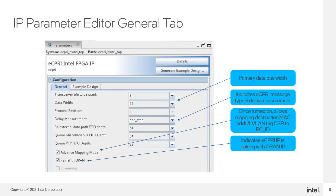All configurable options currently available for customizing your IP instance are found on the General tab in the GUI. At the top, select the transceiver tile to which you plan to connect the IP. This is grayed out for the Intel ARIA 10 family since it does not use tiles. Next, you can see the primary bus width — it is fixed at 64 bits. Further down, you can indicate measurement type for ECPRE message 5 delay measurement: either off, one step, or two step.